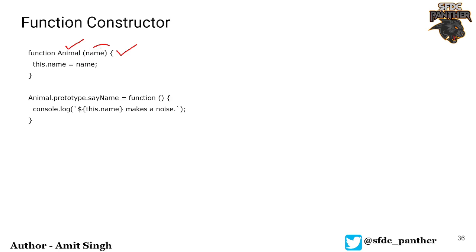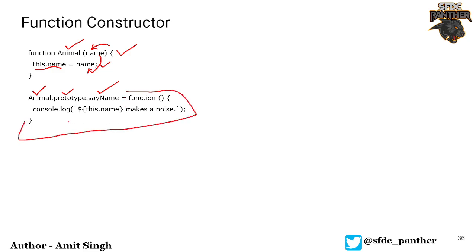If you don't provide any parameters, the constructor takes no arguments. If you do provide parameters, it works as a parameterized constructor. You assign values using this.name and this.age. To add methods, you use the class name followed by .prototype, then the method name, and define it as a function — for example, Animal.prototype.makeNoise = function() {...}.